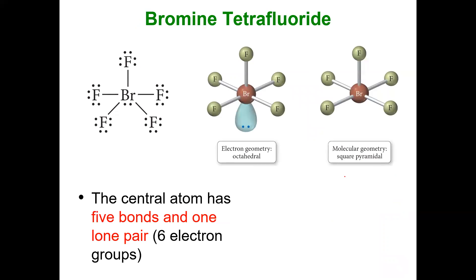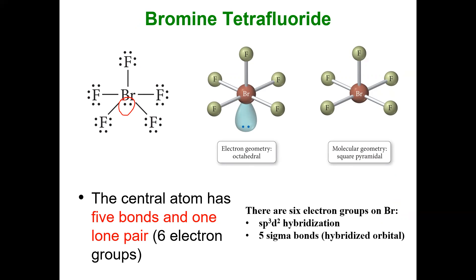Bromine tetrafluoride still has six electron groups, but one is a lone pair and the other five are atoms. Six electron groups, sp3d2 hybridization, five sigma bonds and one lone pair.